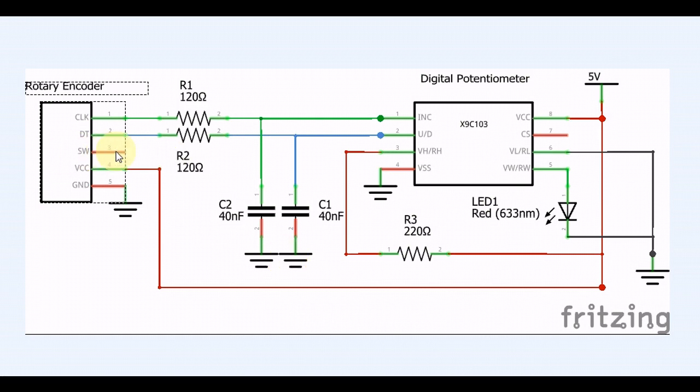This pin here that's not being used on a rotary encoder, that's the switch pin. If you push it in, it has a built-in switch on it. So we're not using that, but it is available for use if need be.